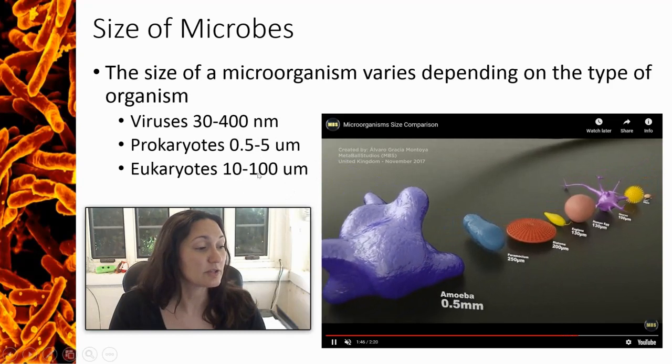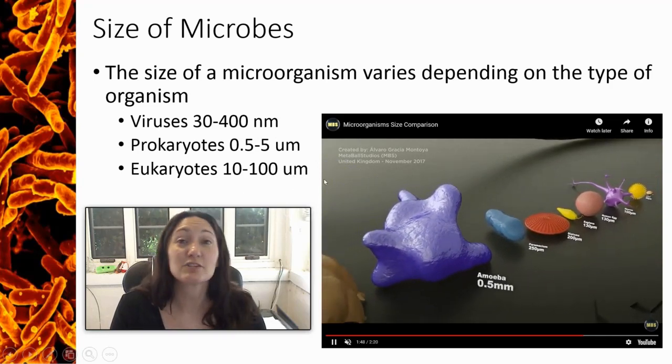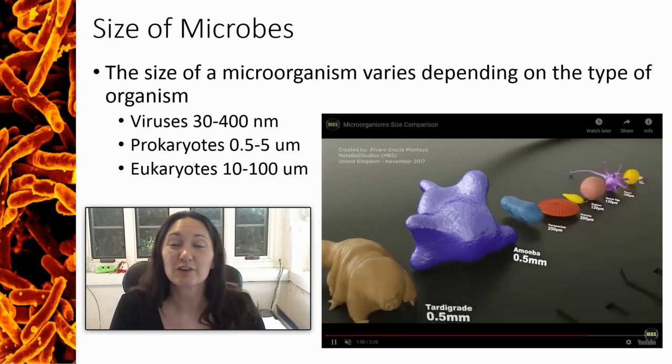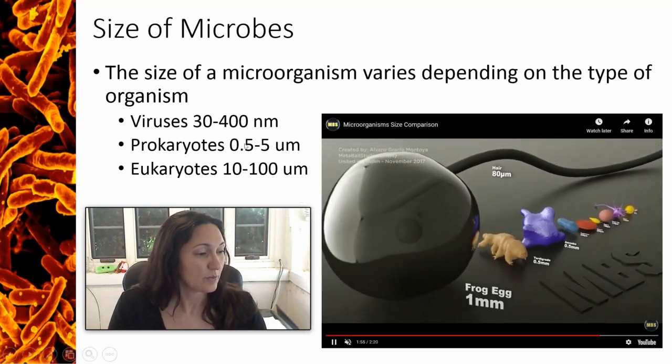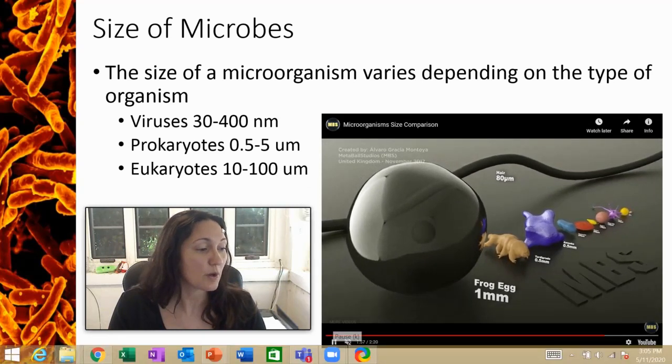Some of these, such as euglena and paramecium, you've probably seen swimming around in pond water if you've ever looked at pond water under a microscope. And then we get up to a frog egg, which is one millimeter in size, about the size that you can see comfortably with the naked eye.